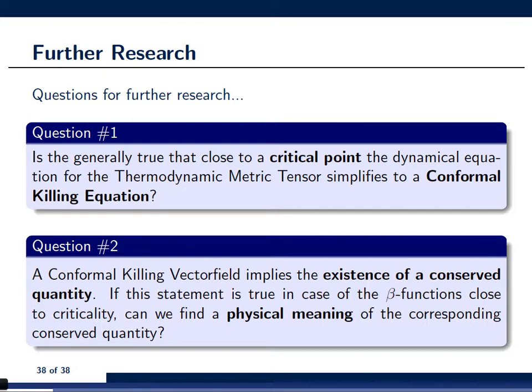And a first consequence is that it implies that the beta function in the vicinity of the critical point is what one calls a conformal killing vector field. And the existence of such a conformal killing vector field implies the existence of a Noether current or of a conserved quantity in the vicinity of the critical point.